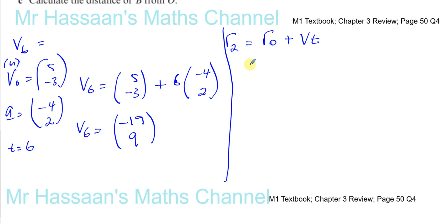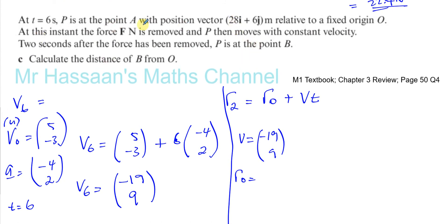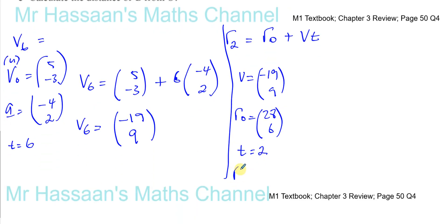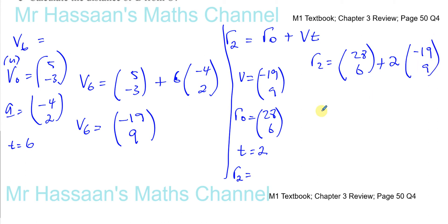Now the velocity is constant at (minus 19, 9). The initial position at the start of this new motion is R0 = (28, 6), which is the position at point A. The time is 2 seconds, since it says 2 seconds after the force is removed P arrives at B. So after 2 seconds, the position vector is 28, 6 plus 2 times (minus 19, 9), giving 28 minus 38 = minus 10, and 6 plus 18 = 24. So the position vector at B is (minus 10, 24).